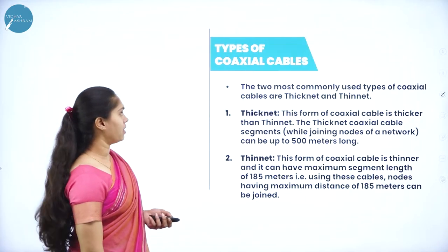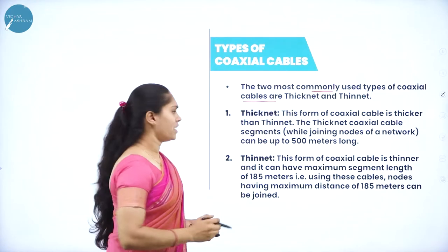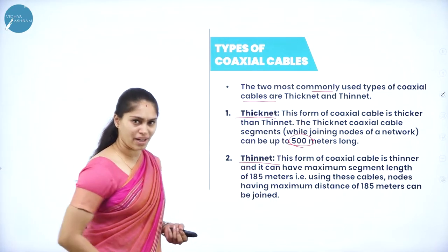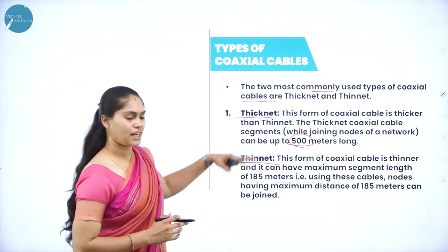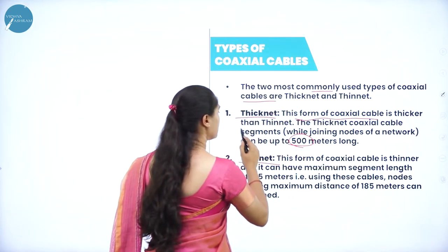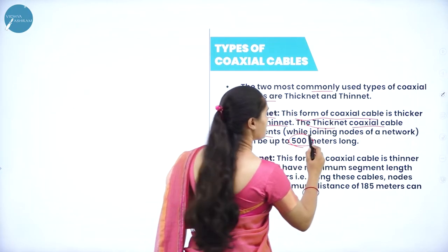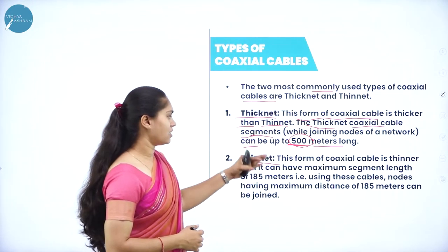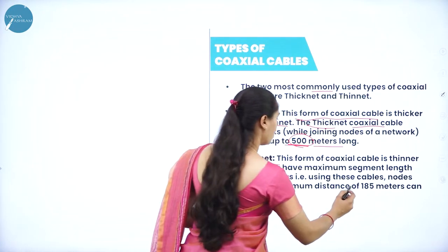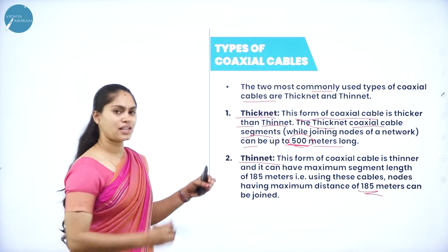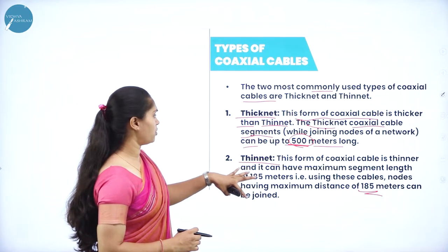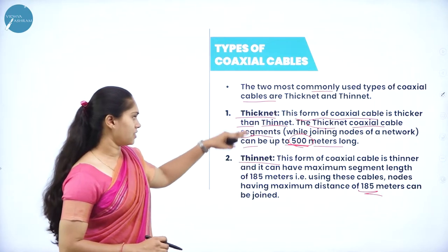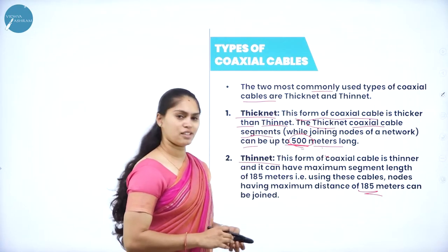Coaxial cable has high electrical properties and is suitable for high-speed communication, most commonly used with television signals. There are two main types: thick net and thin net. Thick net coaxial cable is thicker and supports segment lengths up to 500 meters. Thin net supports a maximum distance of 185 meters. Remember: thick net is 500 meters, thin net is 185 meters.